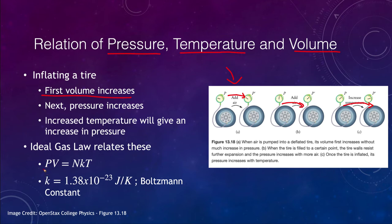We want to relate how these are related through the ideal gas law. The ideal gas law states that the pressure times the volume is equal to the number of atoms times K, which is the Boltzmann constant, multiplied by the temperature. K is 1.38 times 10 to the negative 23rd joules per Kelvin. If we know three of these values—the pressure, volume, number of atoms, or temperature—we can calculate the fourth.